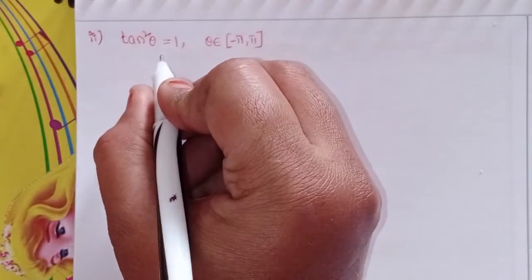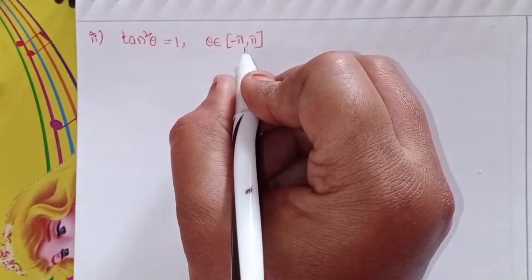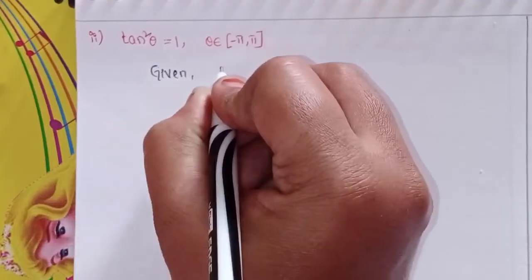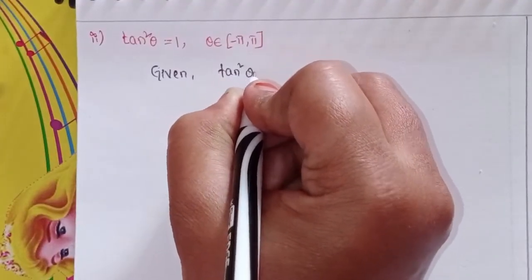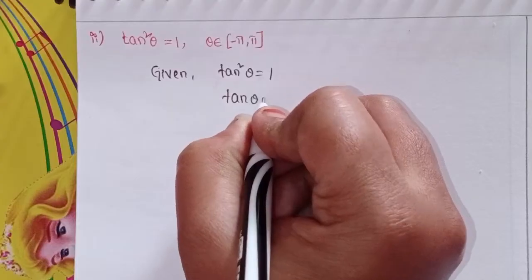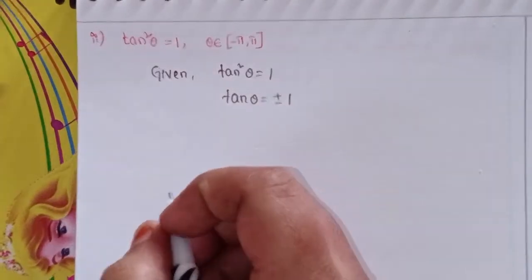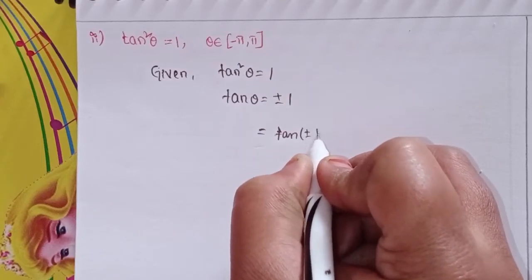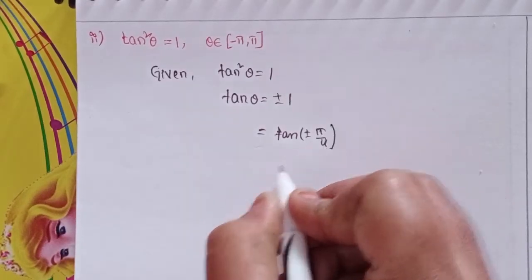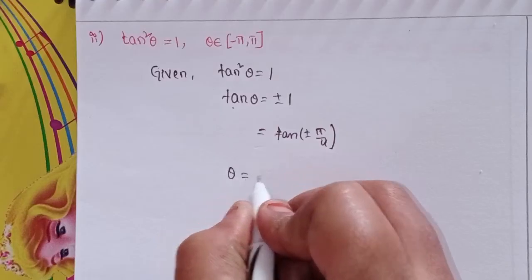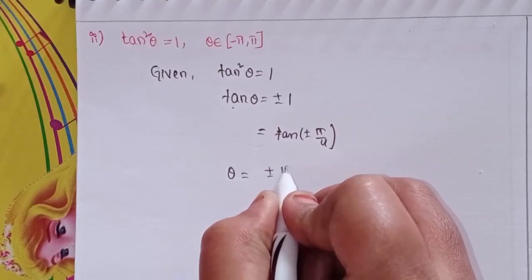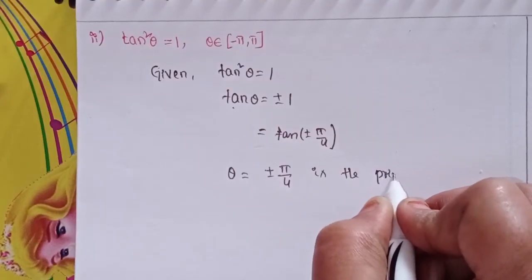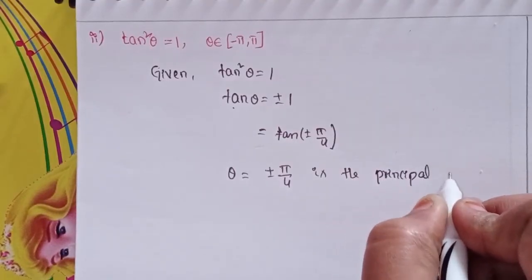Second one: tan²θ = 1, where θ belongs to -π to +π. Given tan²θ = 1, then tan θ = ±1. That means tan θ = tan(±π/4). So canceling tan, θ = ±π/4 is the principal solution.